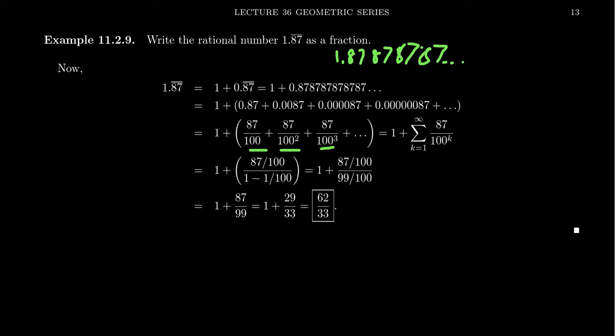Why 100? Well, 100 is 10 squared, and 2 here is the length of our period. That's how often this repeats itself, every two decimal places.